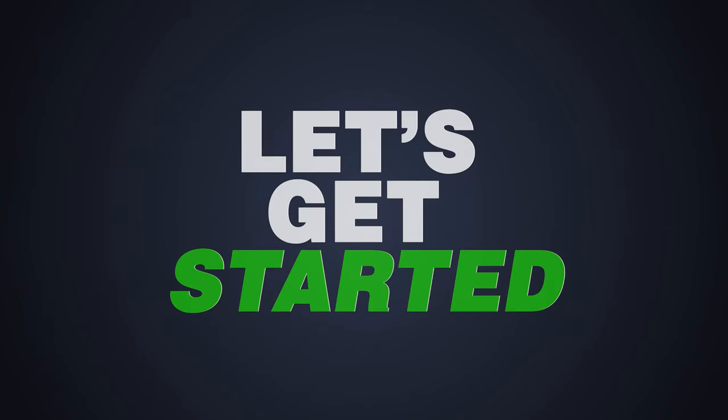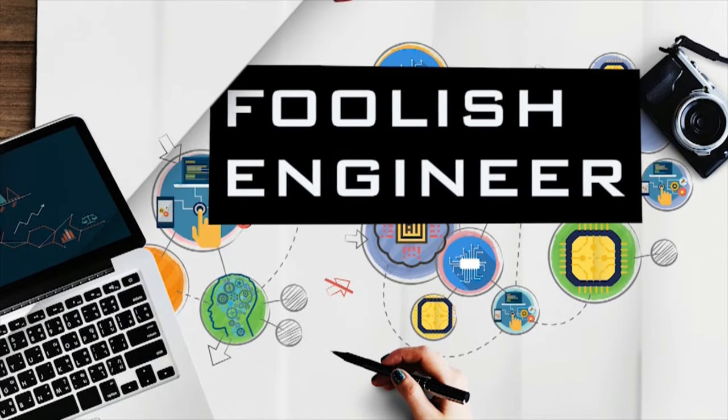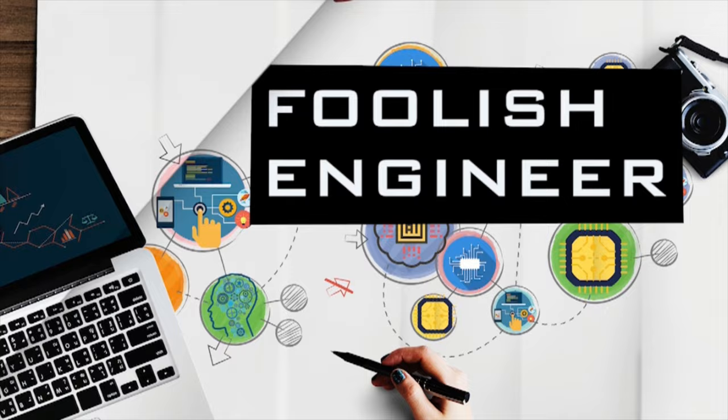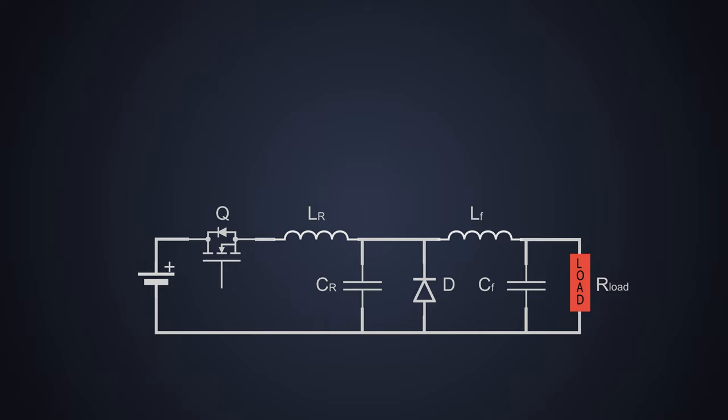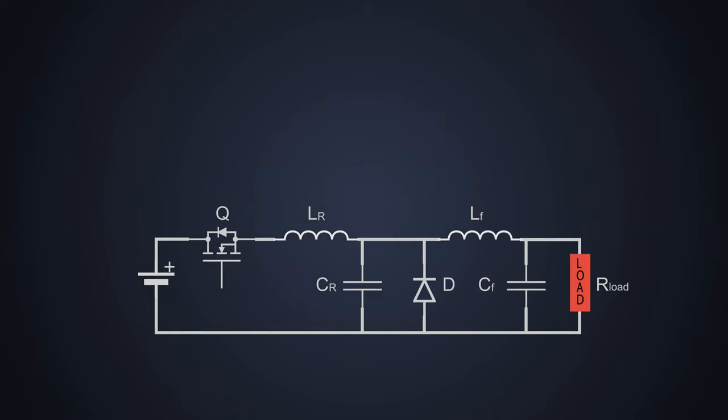So let's see how it works. To understand zero current switching, we'll take an example of a resonant buck converter circuit. There are different types of resonant buck converters, but we'll specifically look into the L-type resonant buck converter in which an LC resonating circuit is used.